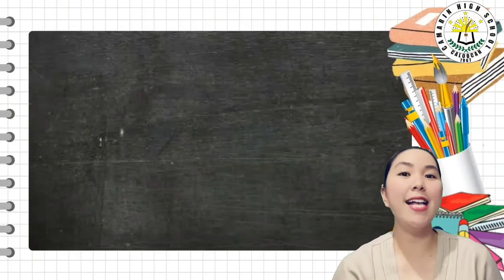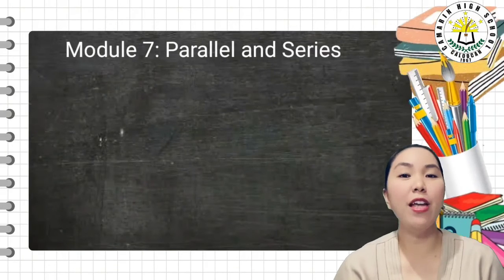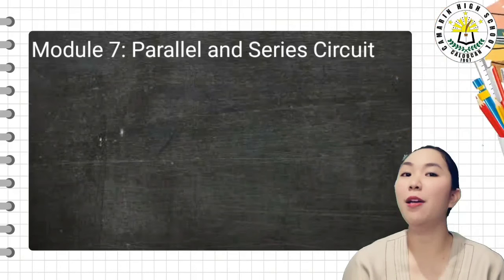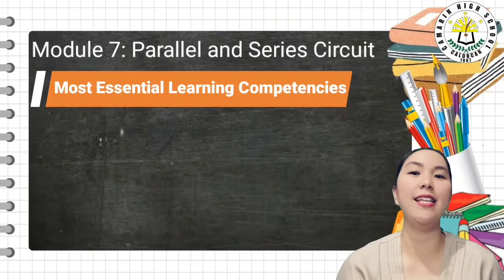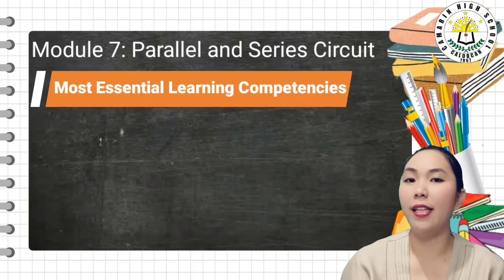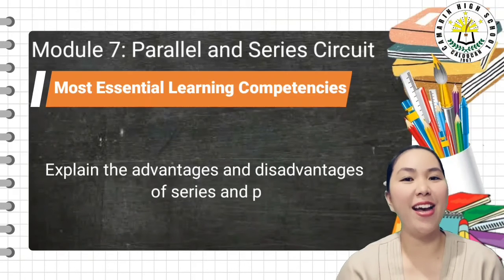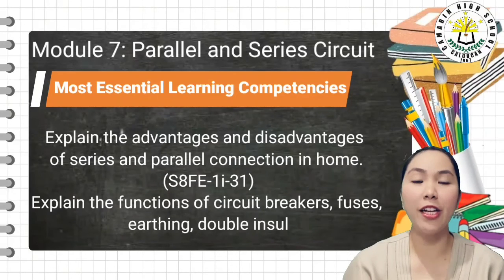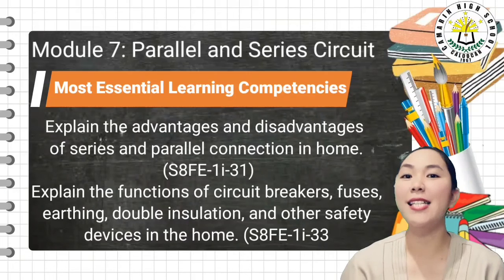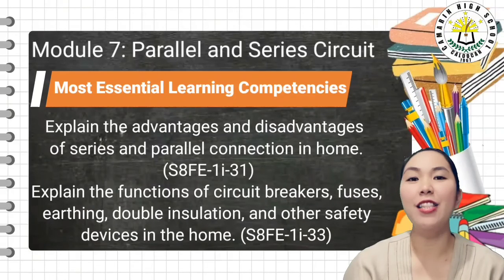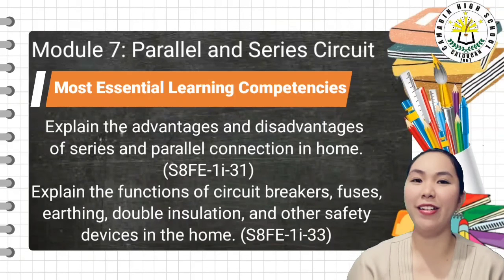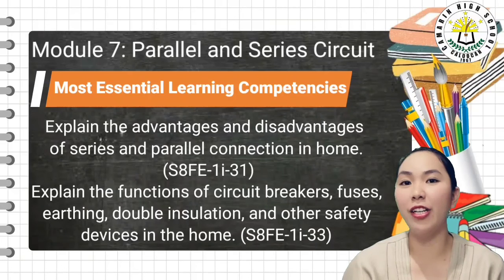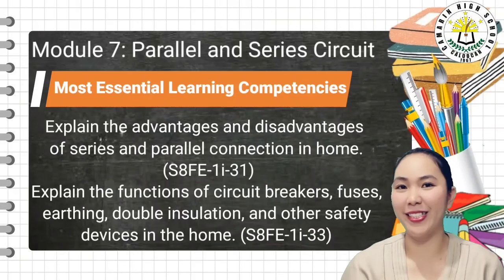Last is Module 7. Module 7 focuses on parallel and series circuits. The most essential learning competencies in Module 7 are: first, to explain the advantages and disadvantages of series and parallel connection in the home; and second, to explain the functions of circuit breakers, fuses, grounding, double insulation, and other safety devices in the home.